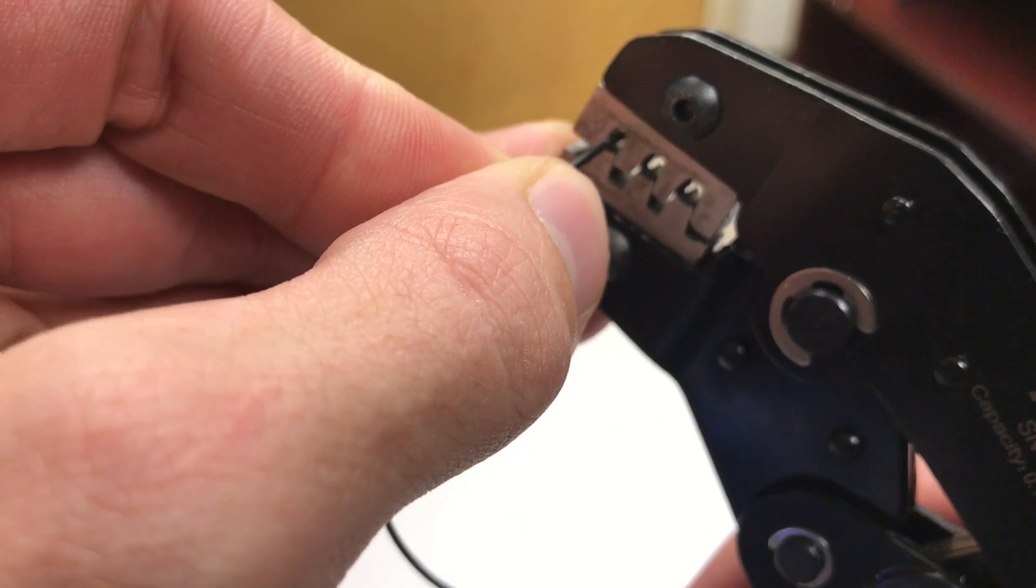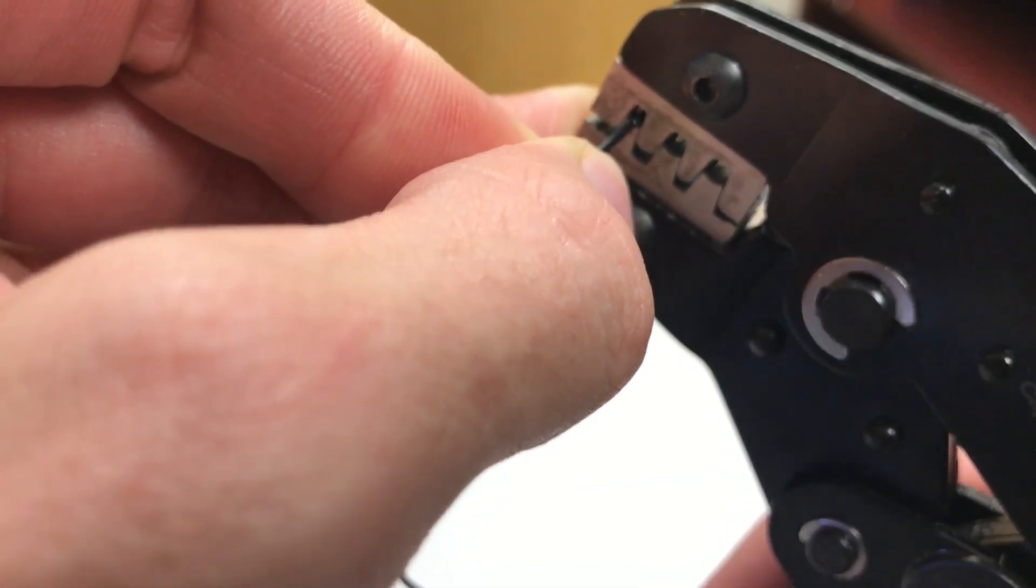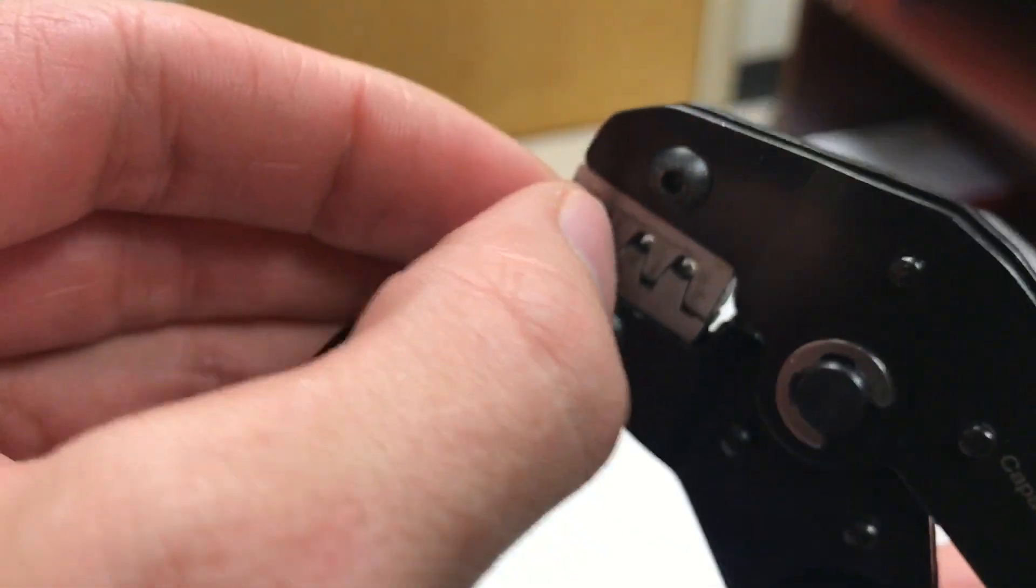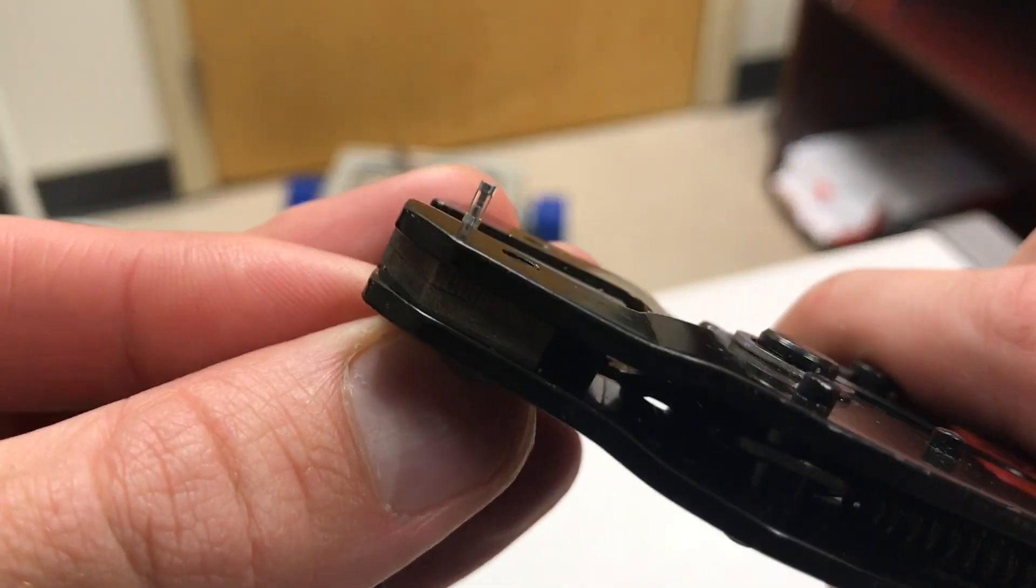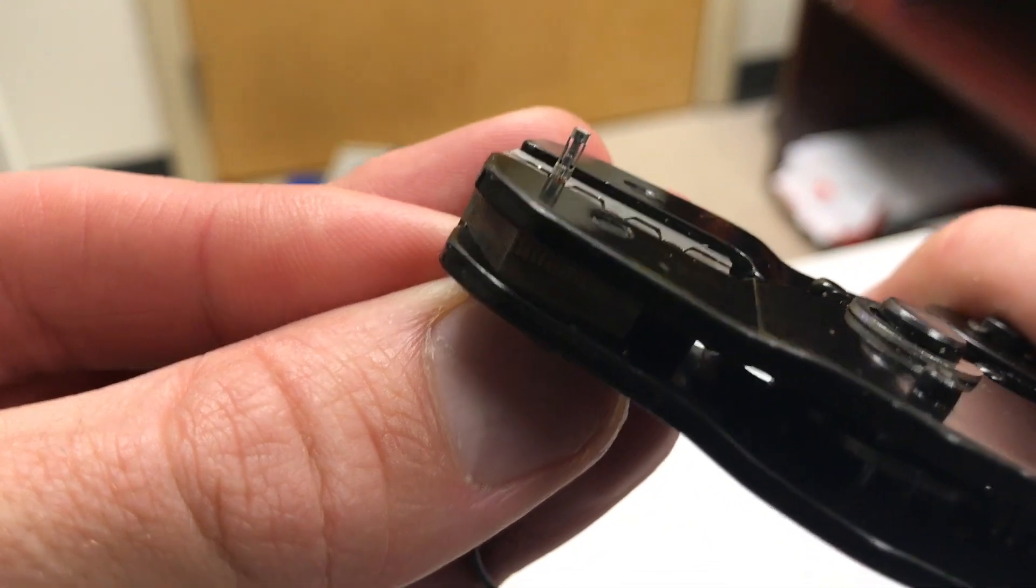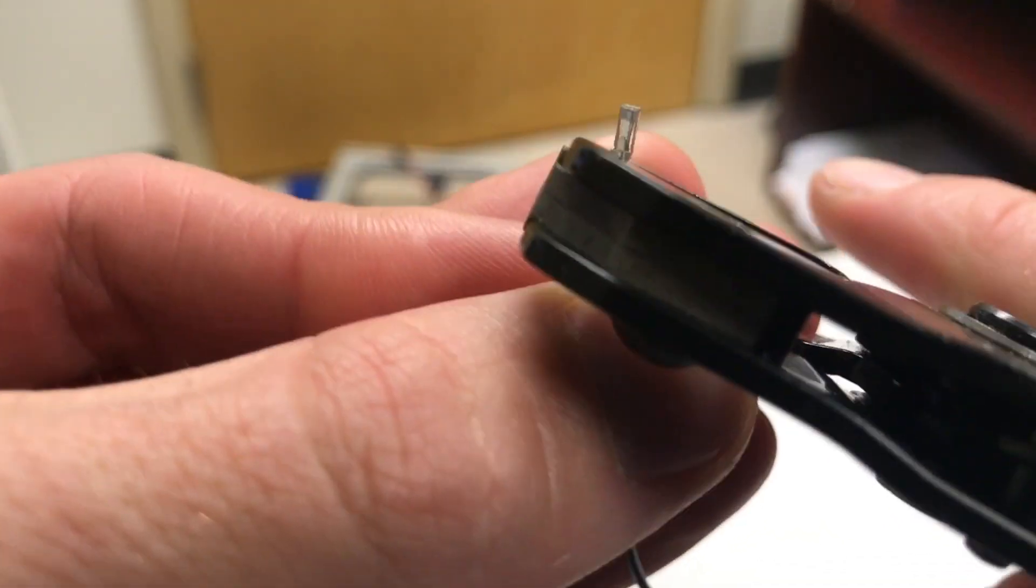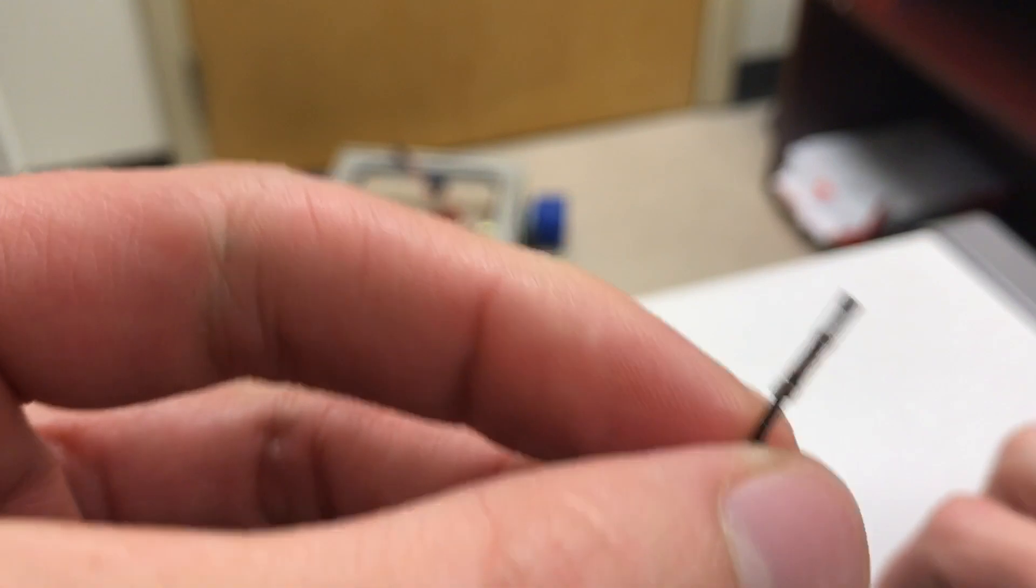I'm going to feed the wire in just enough that I think two millimeters is going to be grabbed by the big arms. Then I'm going to check on the back side. Make sure that I'm not about to crush section C. Go ahead and squeeze all the way and release.